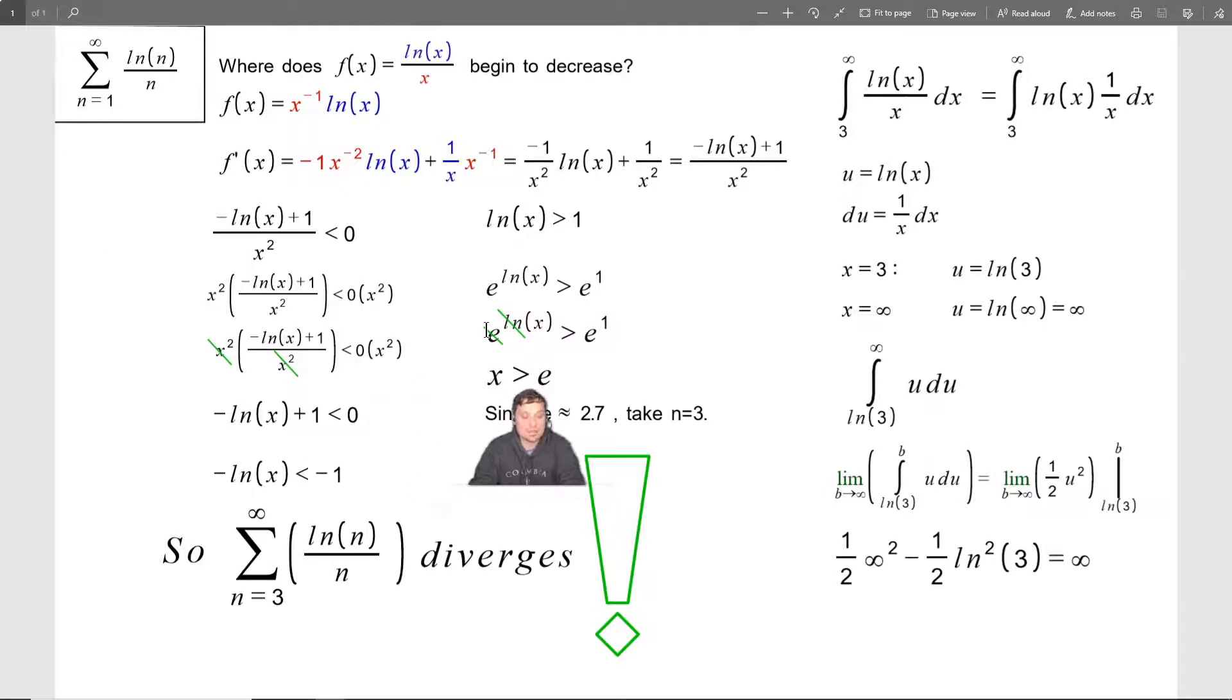So over here, you see, this is x is greater than e, and e is about 2.7. So for that reason, with reference to the original sum, what I have to do is take n to be 3. I can't take it to be 2.7. That's not an allowed value for n because n is a whole number, like 5 or 10 and so on.